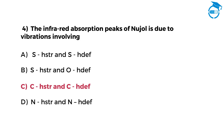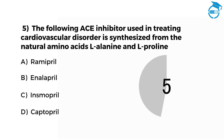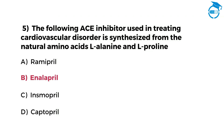Here is the next question. The following ACE inhibitor used in treating cardiovascular disorder is synthesized from the natural amino acid. Option A: lisinopril. Option B: enalapril. Option C: ramipril. Option D: captopril. The right option is B, that is enalapril. Few more questions left. Let us move ahead and take the challenge.